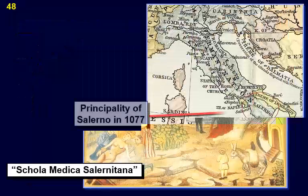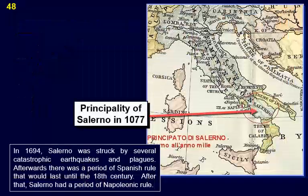In 1694, Salerno was struck by several catastrophic earthquakes and plagues. Afterwards there was a period of Spanish rule that would last until the 18th century, after which Salerno had a period of Napoleonic rule.